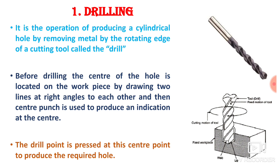Before the drilling process, you have to complete the marking process. You draw two different lines which are perpendicular to each other, and the intersection gives the location for the drilling. Then a center punch is used to produce an indication at the center — this is the punching process. After marking and punching, the drill point is pressed at this center point to produce the required hole.